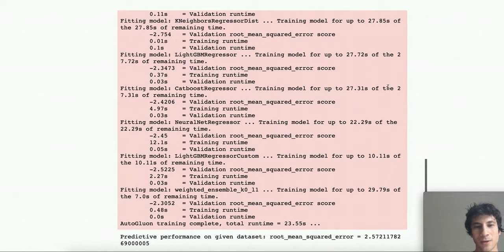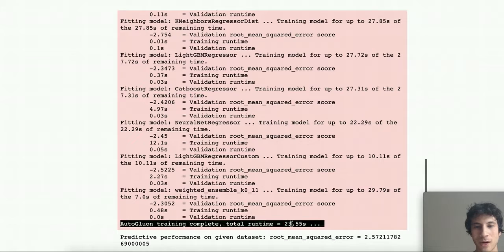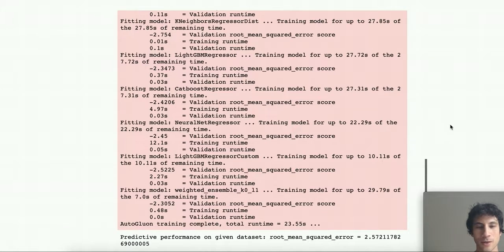Finally, so it'll train models like k-nearest neighbors, LightGBM boosted trees, neural networks, etc. And finally, it'll create a weighted ensemble that combines the predictions from all these models. And here it actually completed training in just 23 seconds, which is less than our 30 second time limit, because this dataset, again, is just really tiny, only 600 data points.